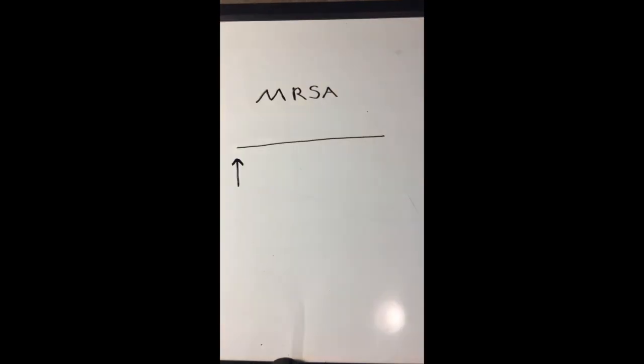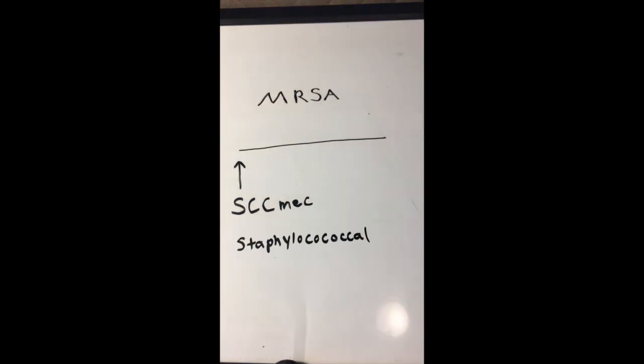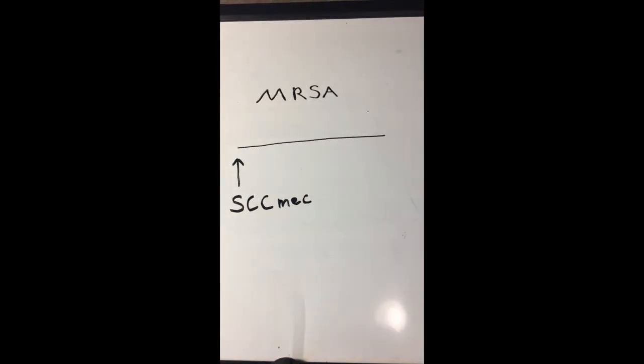The gene responsible for methicillin resistance is MecA, carried on a mobile genetic element called the staphylococcal cassette chromosome. Four forms of this have been discovered in different sizes and genetic compositions.